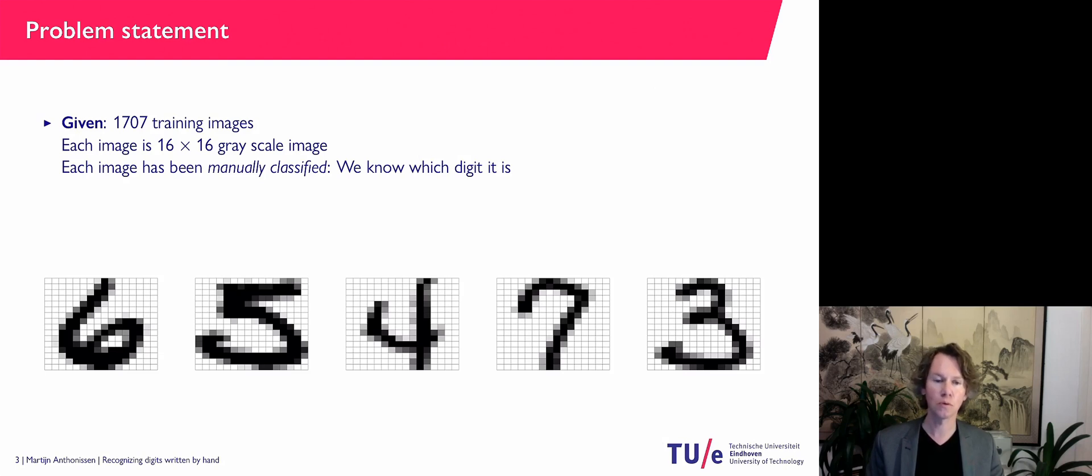Now for this training set somebody has taken a look at them and a person has classified them. So we can use this to train our algorithm. We are going to tell the computer these are the digits 65473 and we have got a bunch more of images to train it.